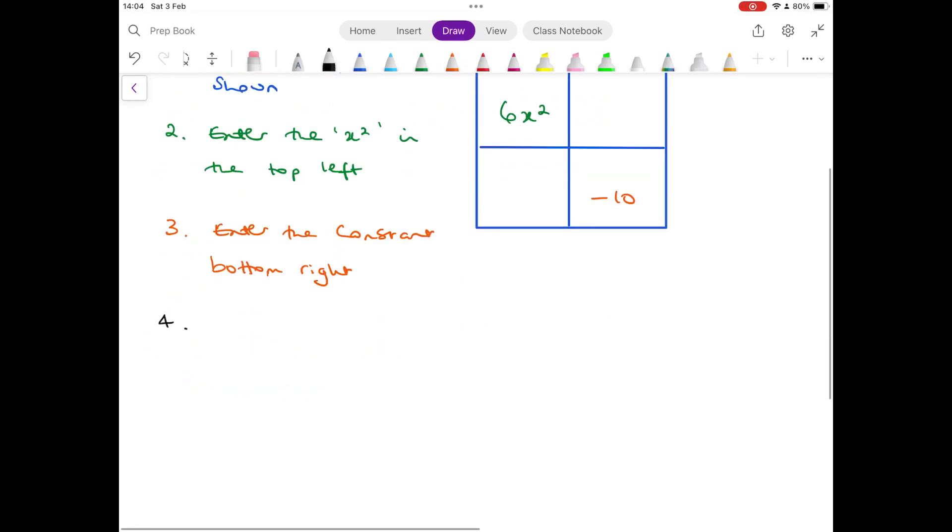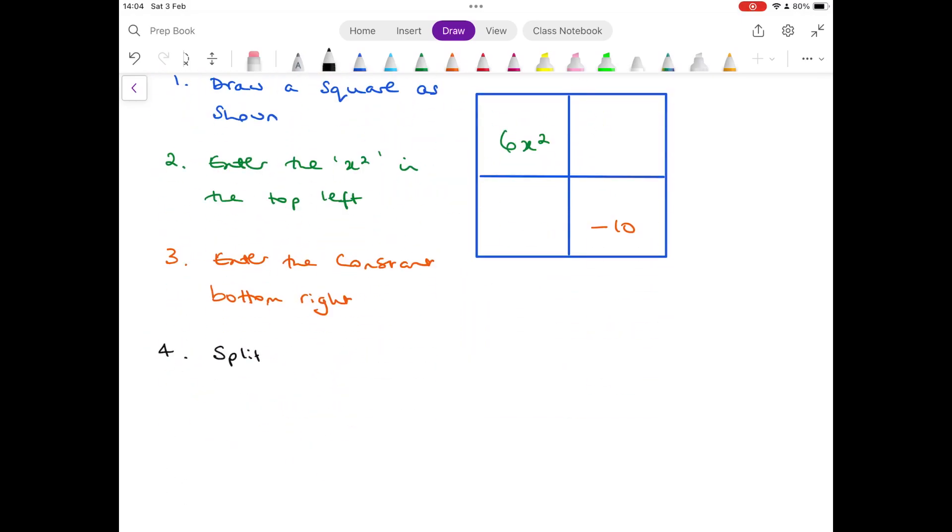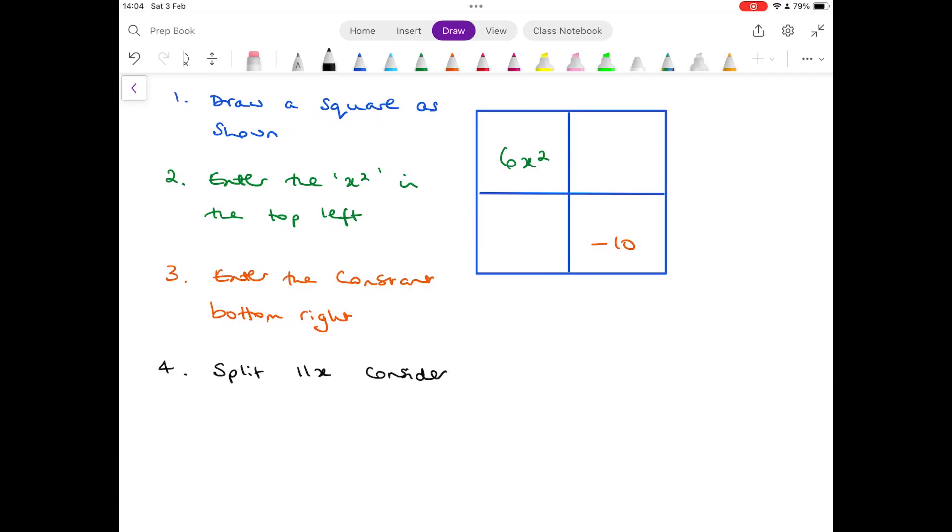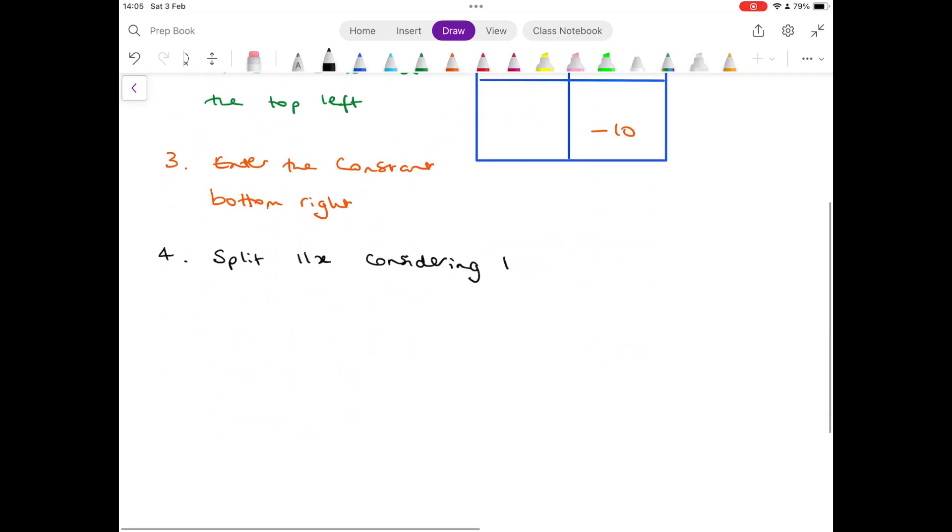Now we need to split the 11x and this is the tricky bit, by considering the number in front of the x squared, 6, and multiply it by minus 10.